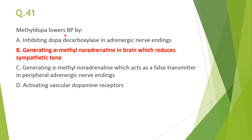Next: methyldopa lowers blood pressure — answer B. Methyldopa is a central alpha-2 receptor agonist or central sympatholytic. It is converted into alpha-methyl noradrenaline in the brain, which acts on alpha-2 receptors and reduces sympathetic tone. Some students may think C is the answer, but the false transmitter mechanism of alpha-methyl noradrenaline has not been proven through research.